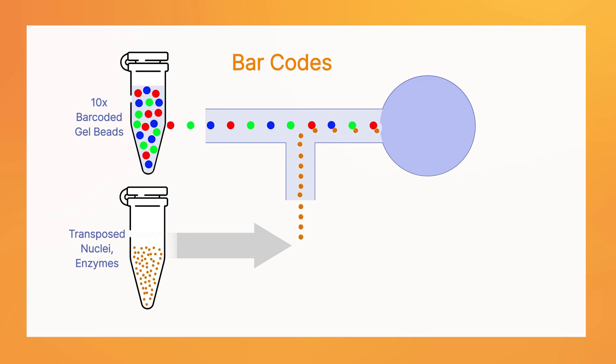The bar-coded bead captures the nucleic acids of interest from each cell or nucleus and labels them uniquely so that we can later identify which transcriptomic and epigenomic data came from which cell.